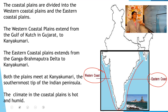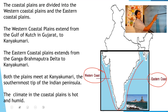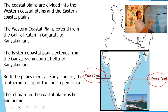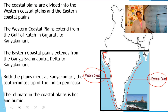There are two types of coastal plains — western coastal plains and eastern coastal plains. Both these coastal plains meet at Kanyakumari. Western coastal plains extends from Rann of Kutch to Kanyakumari. Rann of Kutch is in Gujarat, and Kanyakumari is a place in Tamil Nadu.